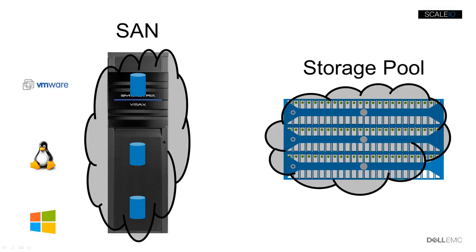A storage pool is a set of hard disks or flash media distributed across a group of x86-64 servers connected over Ethernet. ScaleIO takes the local storage from the servers, abstracts it and pools it, and creates a redundant, high-performance distributed and shared storage system. This allows the applications on all the servers to utilize the storage on all the servers.